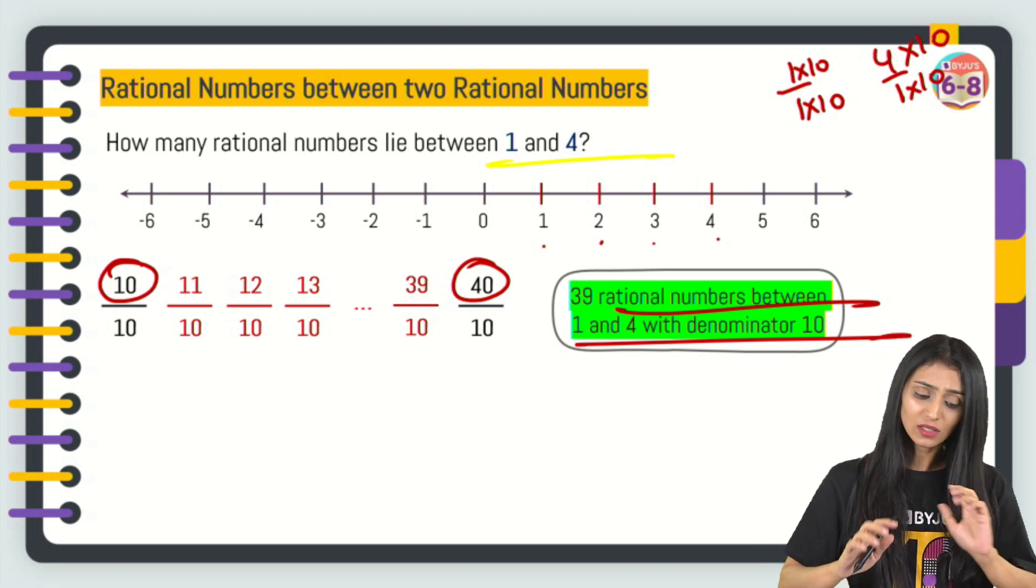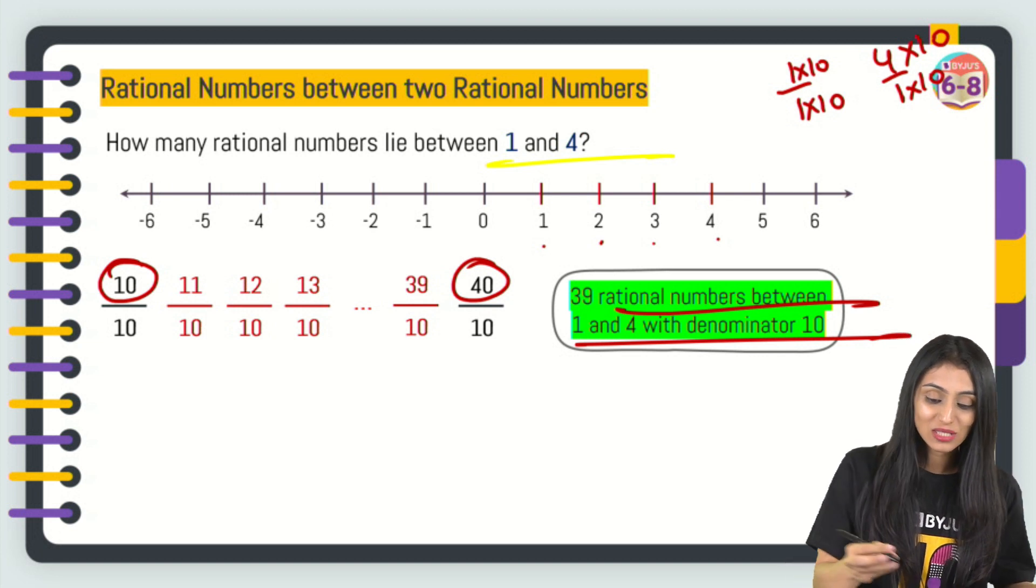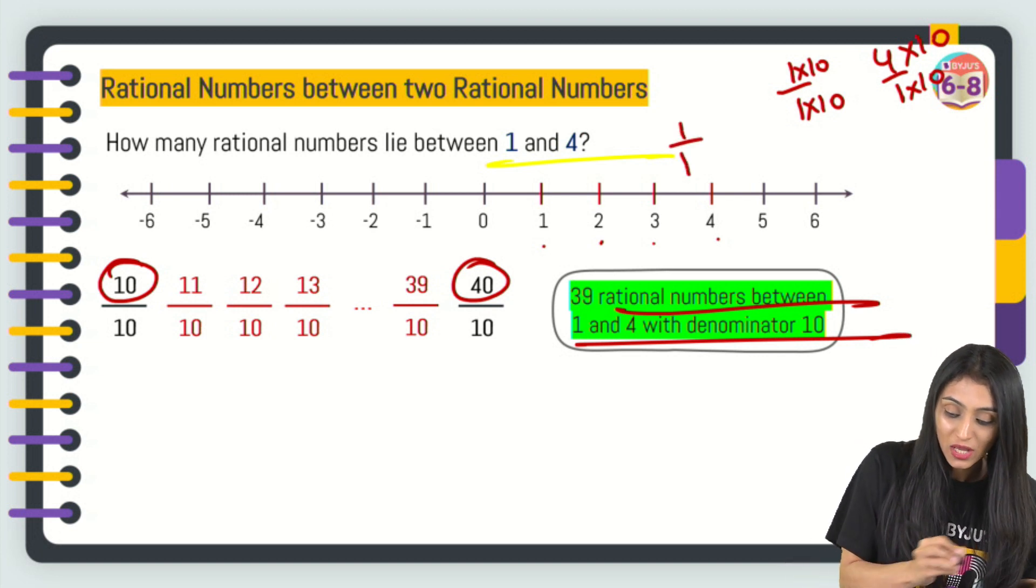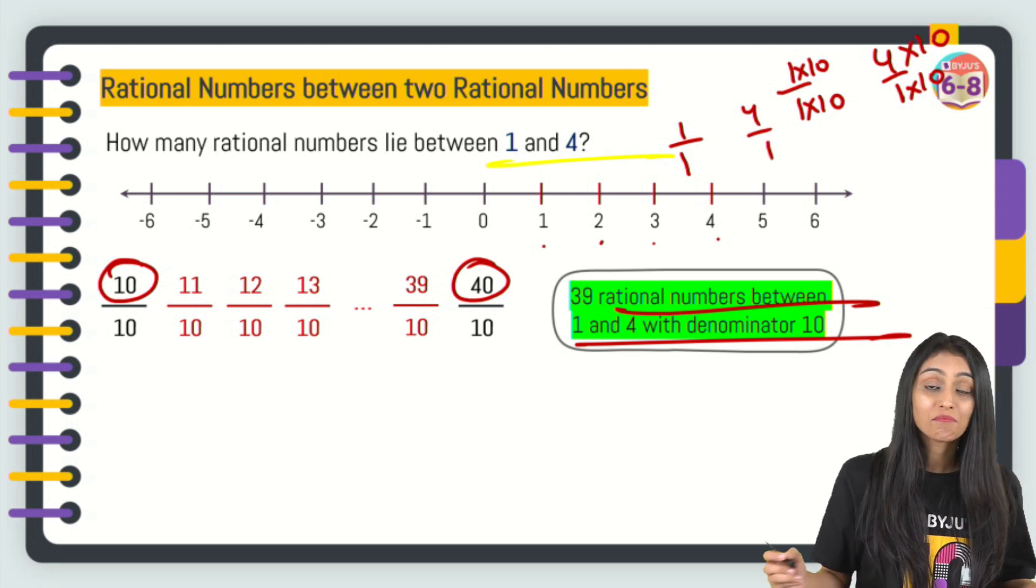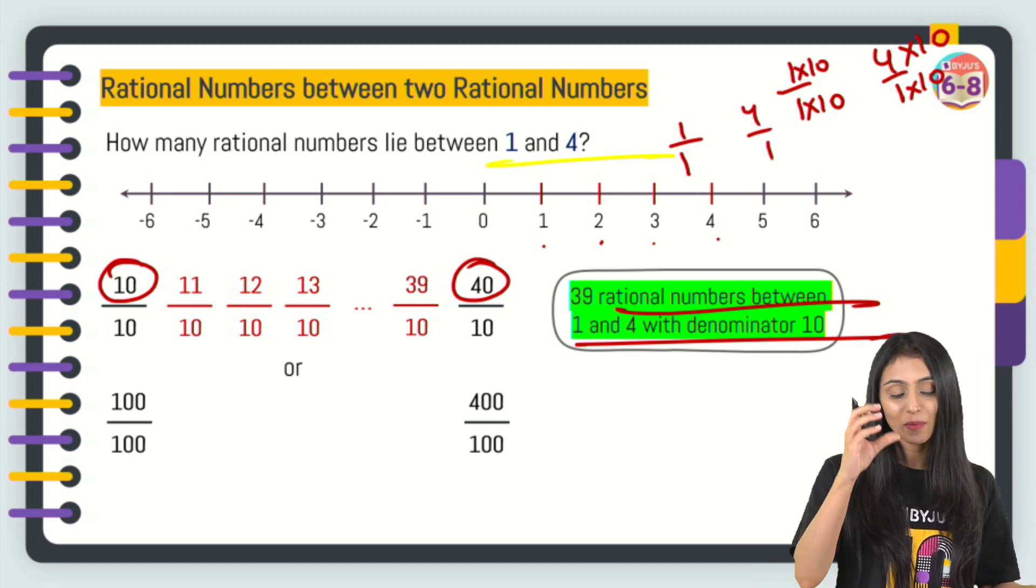But let's suppose, are only 39 rational numbers possible? No, it's not like that. As I said, it is 1 by 1 and this is 4 by 1. If I multiply by 100 instead of 10, what will it become? 100 by 100, 400 by 100.